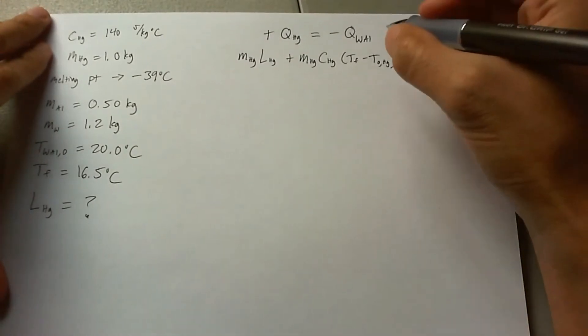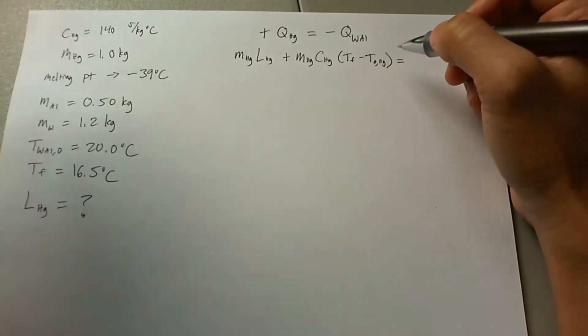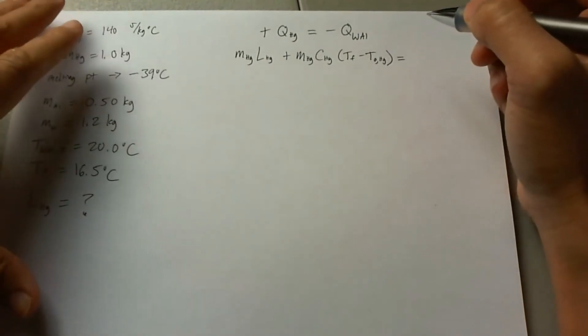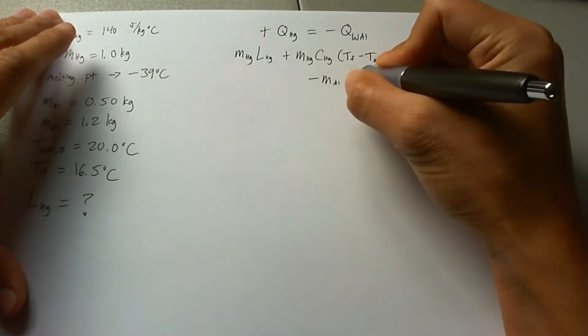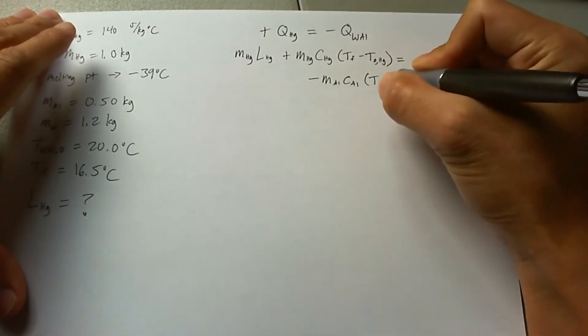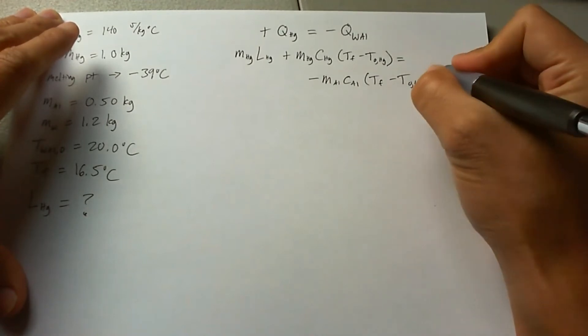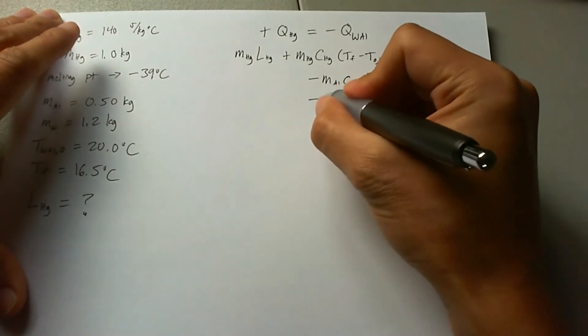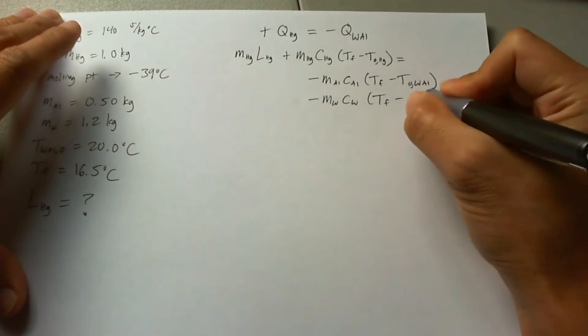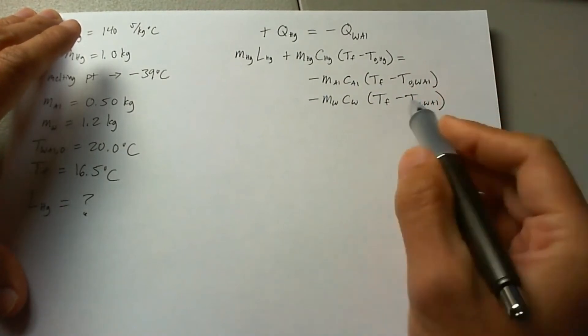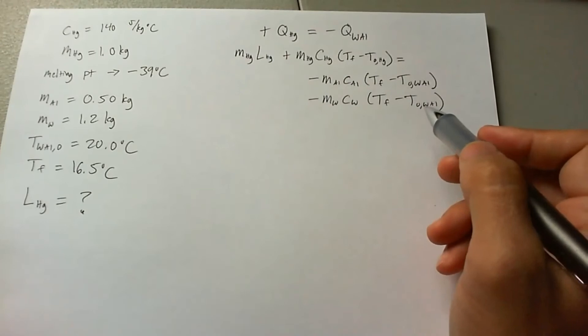And then for the right side of the equation, we have a combination of both aluminum and water. We're going to make them two different terms since they are essentially two different terms. So it'll be equals to negative mass of the aluminum, heat capacity of the aluminum times the change in temperature from final to the initial temperature of the water aluminum system, and then another minus for the mass of the water, heat capacity of the water times the change in temperature. And this term actually is going to be the same for both of these.